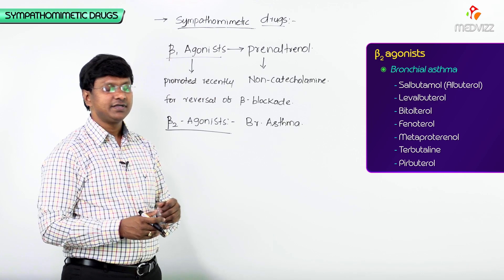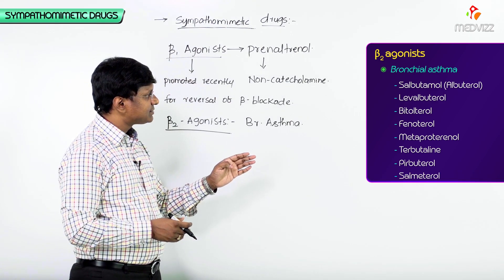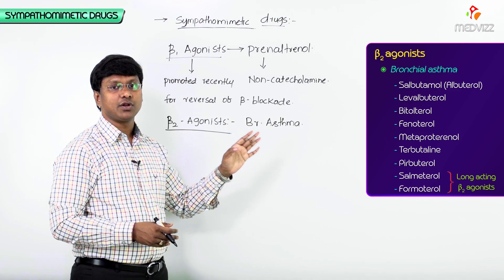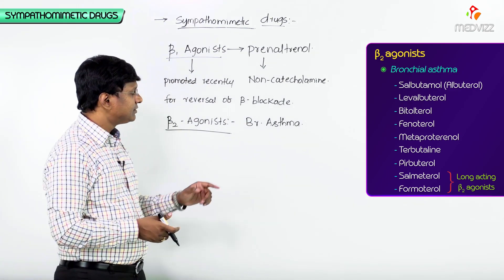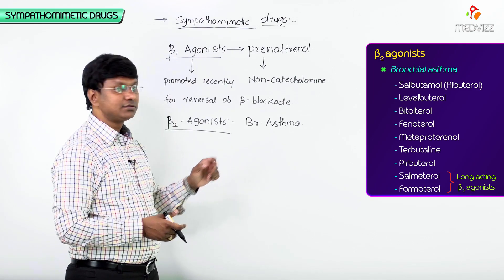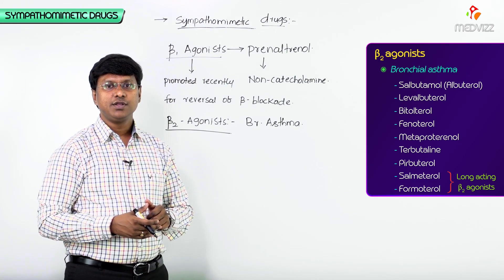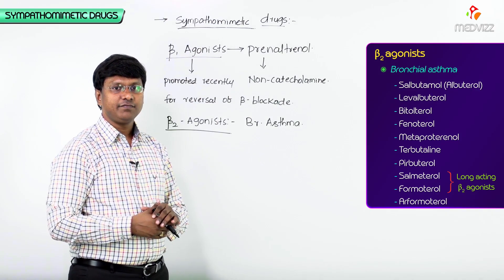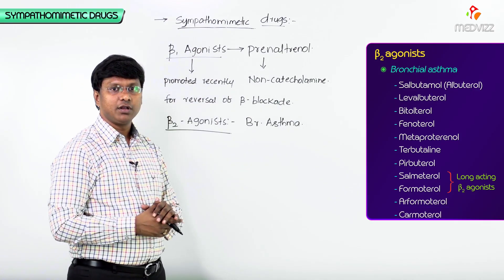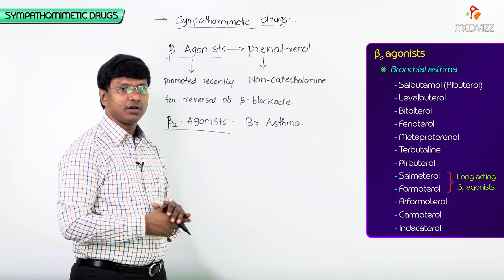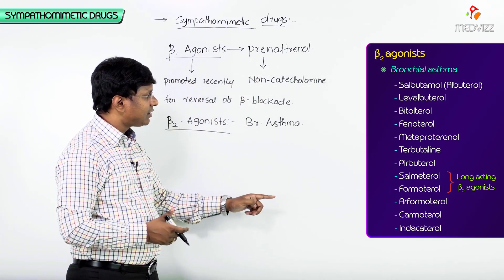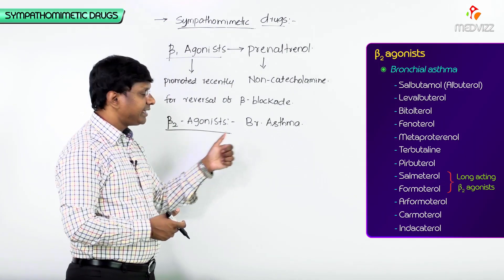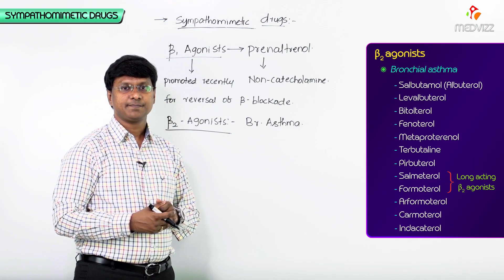The other drugs are salmeterol and formoterol. Salmeterol and formoterol are the long-acting beta2 agonists. Apart from these, we also have R-formoterol, carmoterol, and indacaterol. These are all the selective beta2 agonists which are useful in the treatment of bronchial asthma.